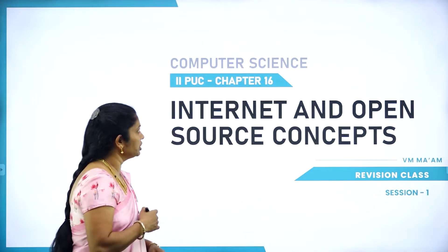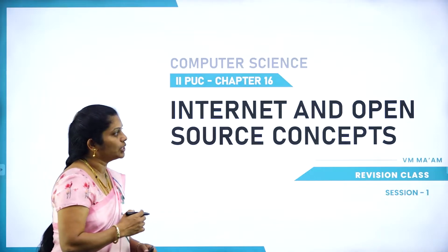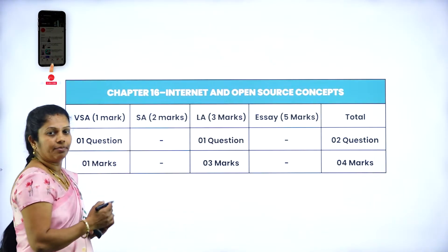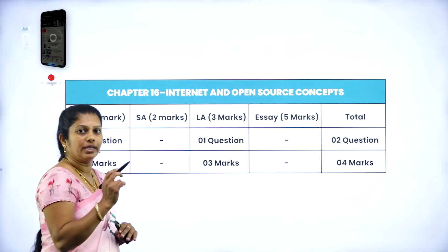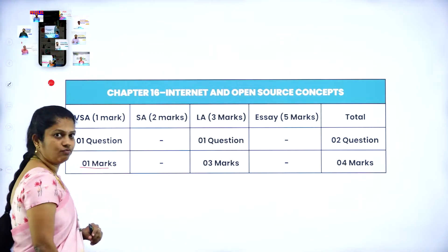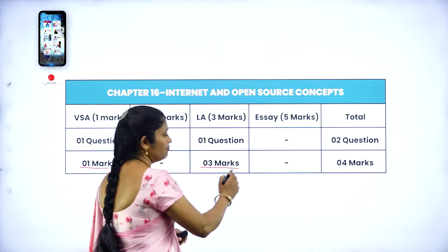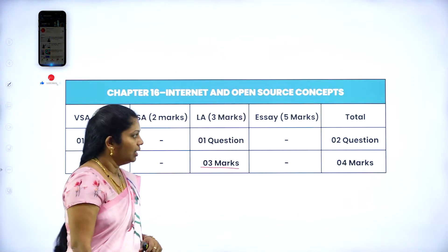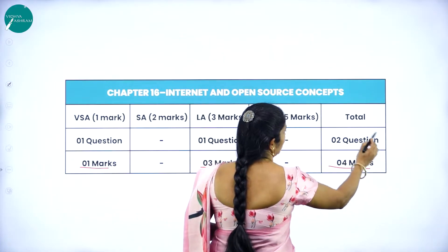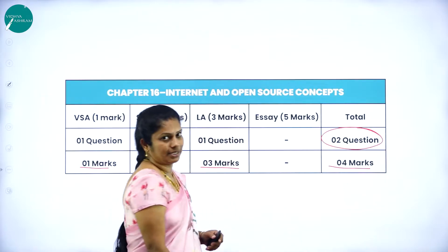Today we are going to start with a revision class on Internet and Open Source Concept. In the annual exam from this chapter you can expect two questions — in Part A one question for one mark, and in Part C one question for three marks. The total weightage of this chapter is four marks.